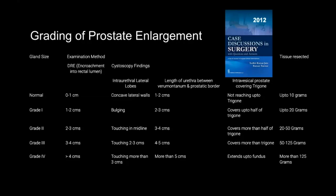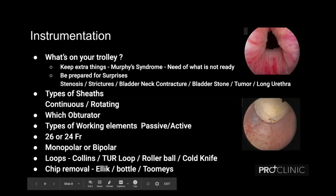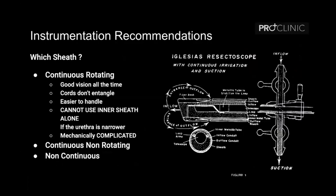Now we'll talk about instrumentation — what should be on the trolley when doing a prostate surgery. The resident should understand that we are always expected to keep extra things because Murphy's law comes into play. There could be a meatal stenosis, so we need a meatal dilator or things for a meatoplasty; there could be strictures, so we need everything for an optical urethrotomy; it could be a bladder neck contracture, so a Collins knife; there could be a bladder stone, tumors, or if the urethra is too long we have to be prepared for a perineal urethrostomy. We also cover pottery loops, chips, sheets, operators, and working elements.